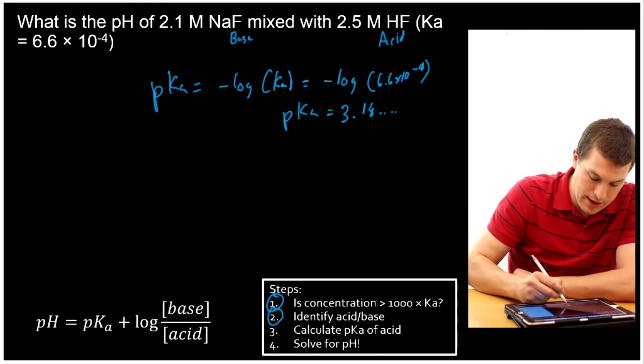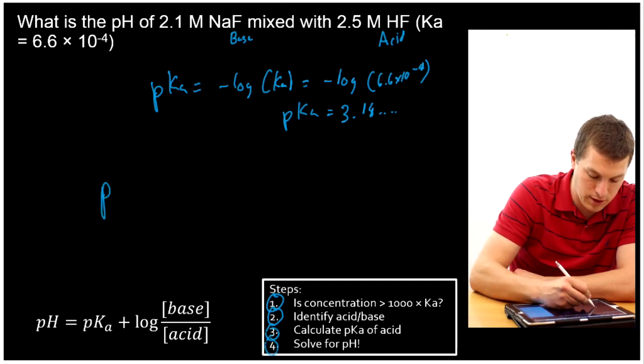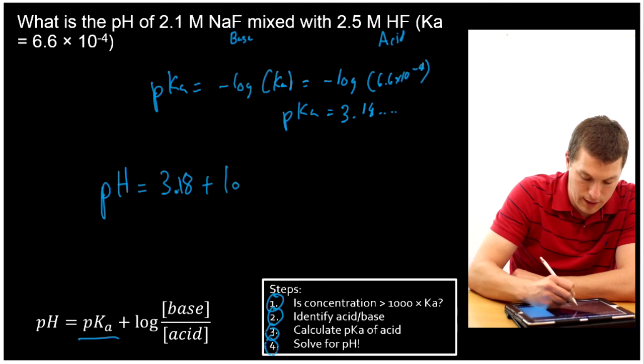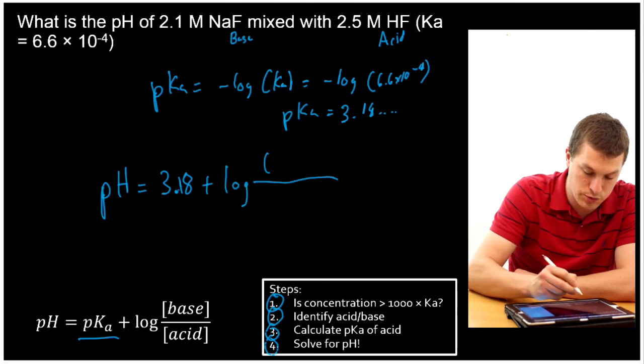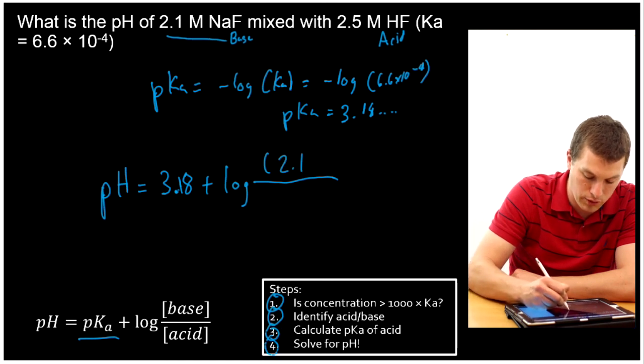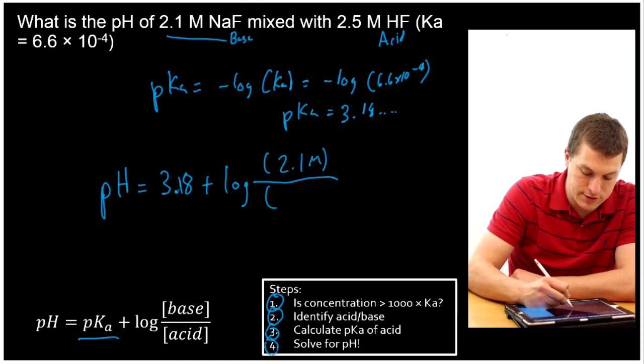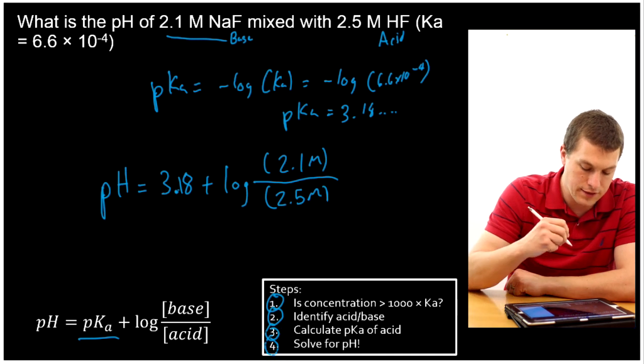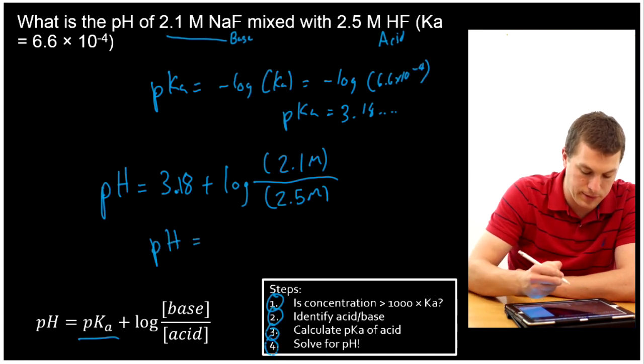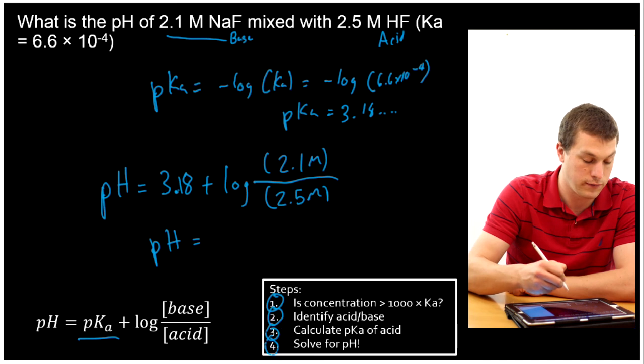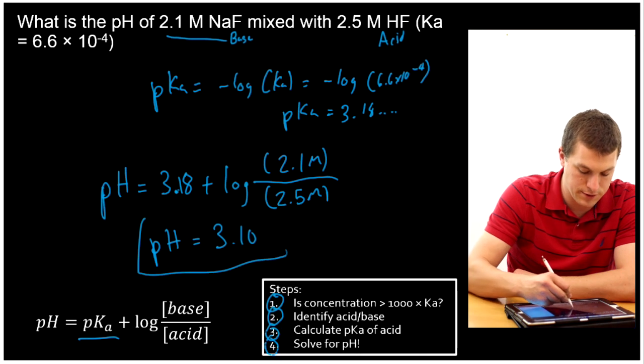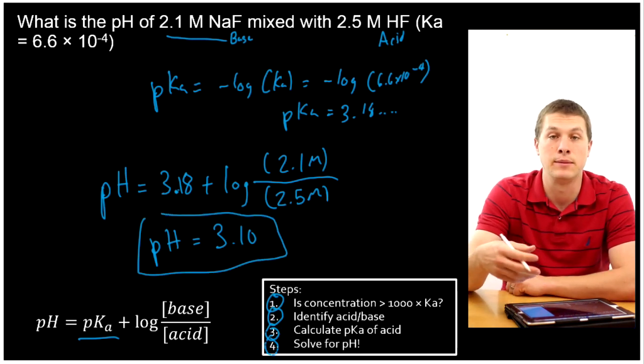That means now we can just go ahead and solve for pH with our Henderson-Hasselbalch equation. pH is equal to pKa, that's 3.18, plus log. Up top goes the concentration of our base, which is 2.1 molar. And on the bottom, we have the concentration of our acid, which is HF at 2.5 molar. When I plug that into my calculator, I'll get 3.18 plus the log of 2.1 divided by 2.5. That gives me a pH of 3.10. Notice that's way easier than going through a long ice table to get the pH of this buffer.